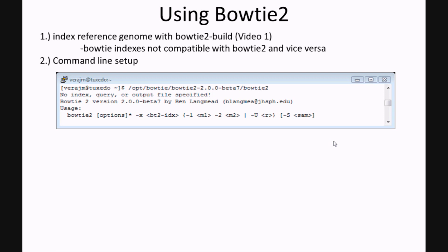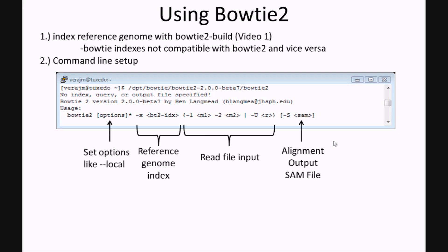Now we're ready to run Bowtie 2. Again, you have to index the reference genome, and you have to use Bowtie 2-build to do this, as Bowtie 2 indexes are not compatible with the original Bowtie indexes and vice versa. The general setup is the same as the original Bowtie with a few detail changes. You have to use the -x option to designate the index, as well as designate your output file using -S and then the file name; otherwise Bowtie 2 will report to standard output.